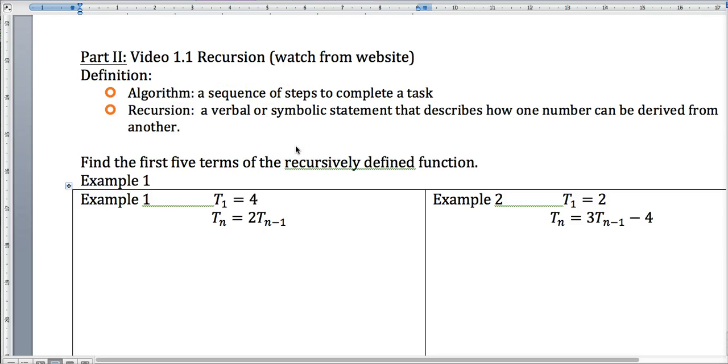Some of you have been through this before but many of you have not. What happens a lot of times is that we have something that is recursive, and so it's a verbal or symbolic statement that describes how one number can be derived from another. So all we're doing is in a sequence, we're finding a rule that will get us from one term to another.